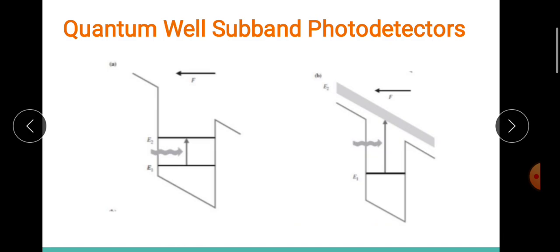Sometimes it is even more effective to use absorption transitions between a single level in the well. For such transitions, we use the AlGaAs/GaAs/AlGaAs type of quantum wells. For them, the energy transition between a single level in the well and the first band outside it is about 0.12 electron volt, because of which the spectral response will be around a wavelength of around 10 micrometers.